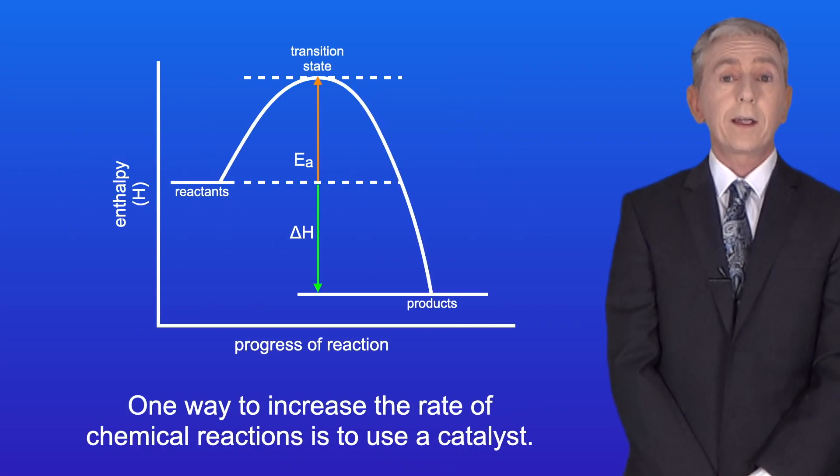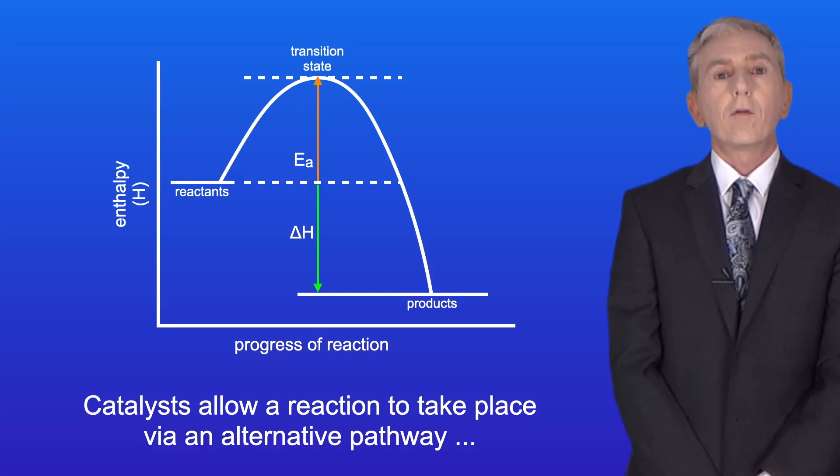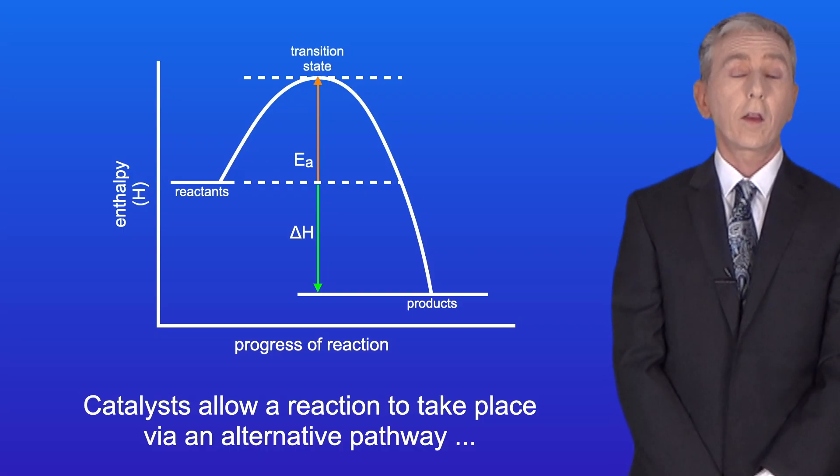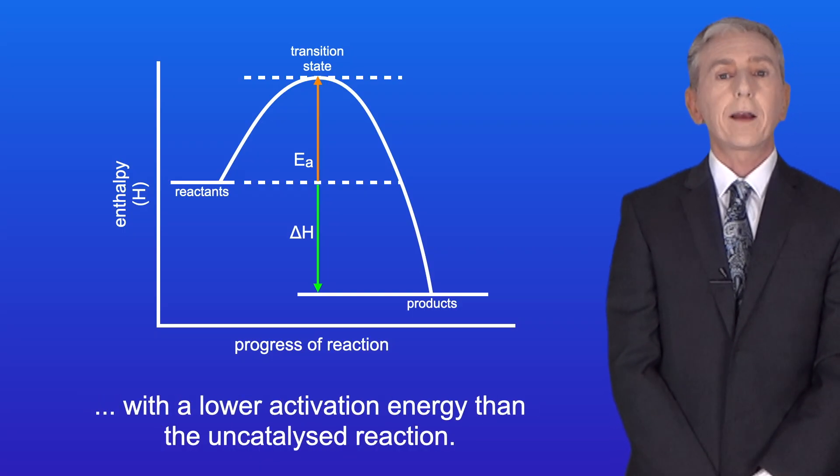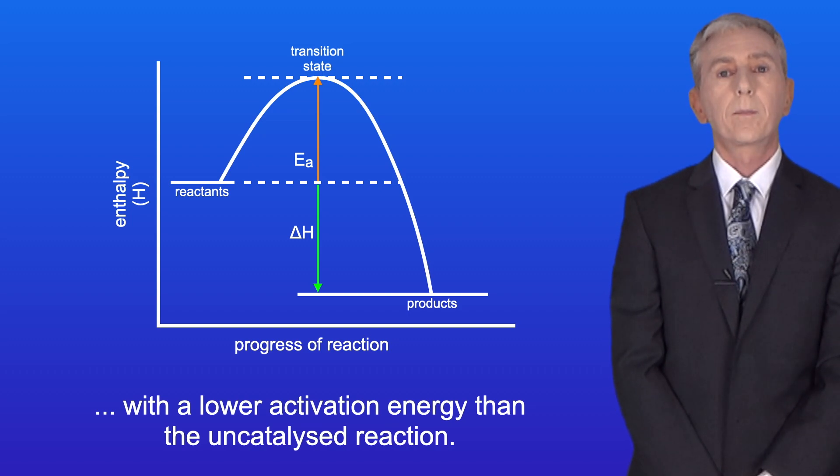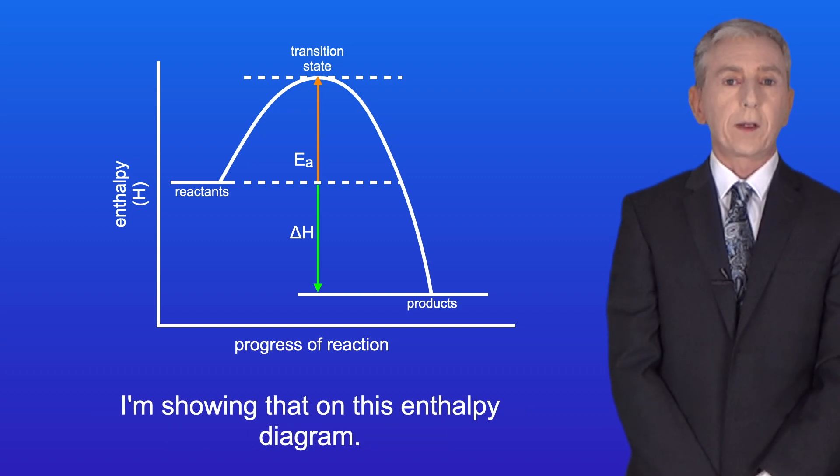Okay, now one way to increase the rate of chemical reactions is to use a catalyst. Catalysts allow a reaction to take place via an alternative pathway with a lower activation energy than the uncatalyzed reaction. I'm showing that on this enthalpy diagram.